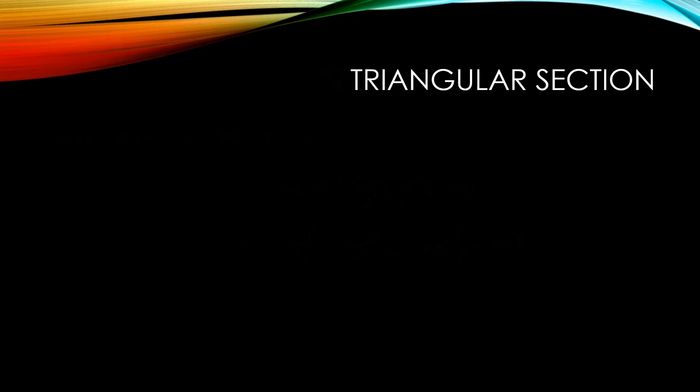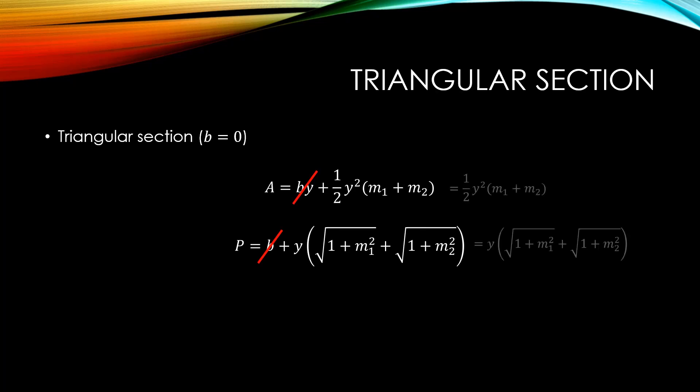In the case of a triangular section, the base or bottom width is equal to zero. So, if we start with the equation for the area and wetted perimeter of a trapezoid, we can cancel out the base from these equations and end with the following equations for area and wetted perimeter.